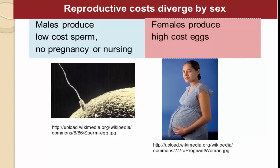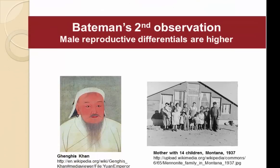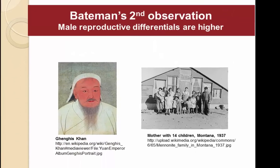The metabolic cost to a male of reproducing is very low, whereas human females produce high-cost eggs that are much larger and less numerous than male sperm. After conception, females struggle through a nine-month pregnancy, and then there are several years of nursing. So the metabolic cost of reproduction is much higher for human females.